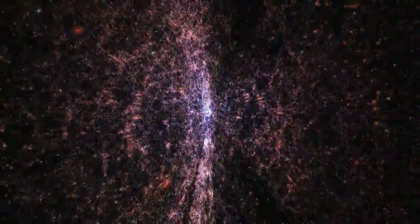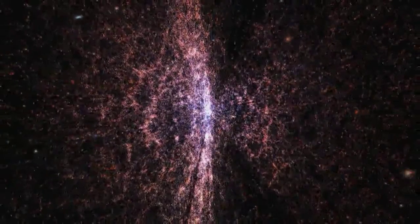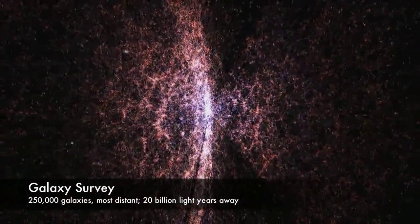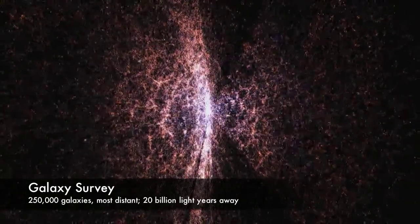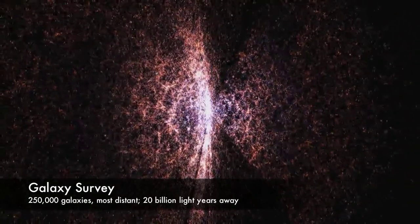And how do we do that? Well my job is to look at this huge three-dimensional galaxy map called Wiggles. It contains the positions of approximately 250,000 galaxies of which the most distant are about 20 million light years from Earth.